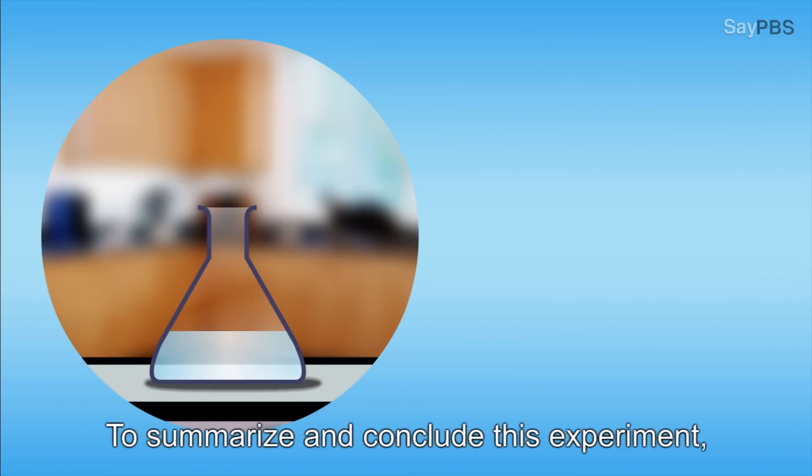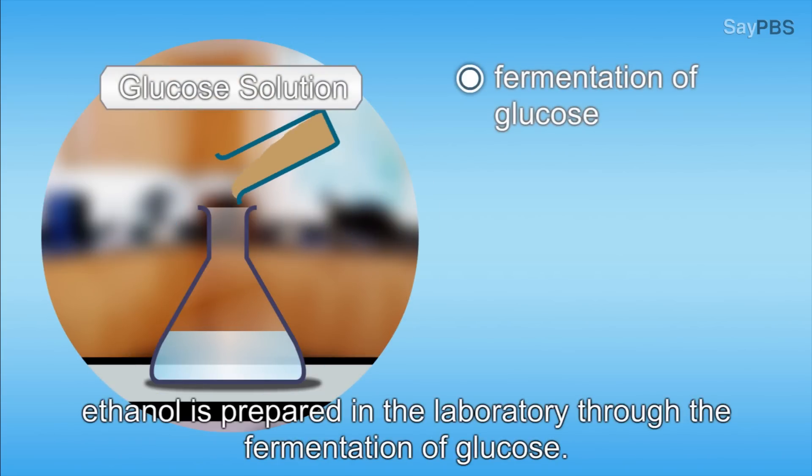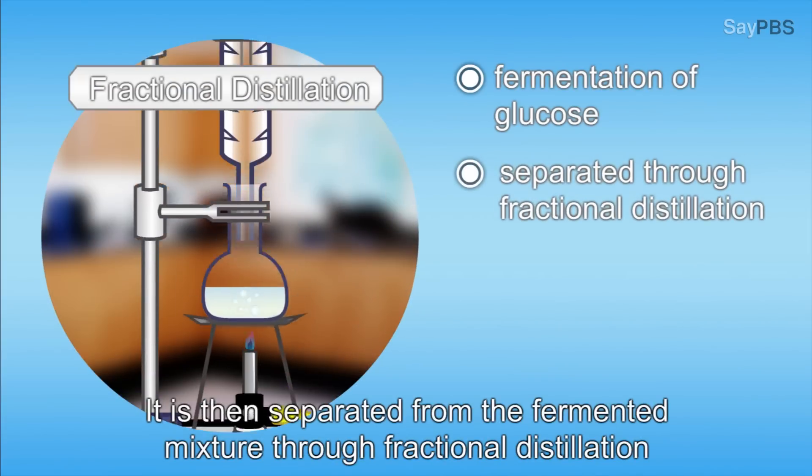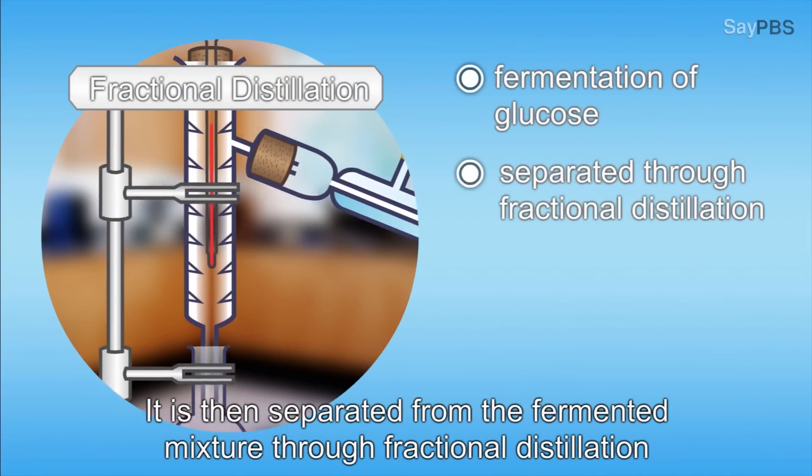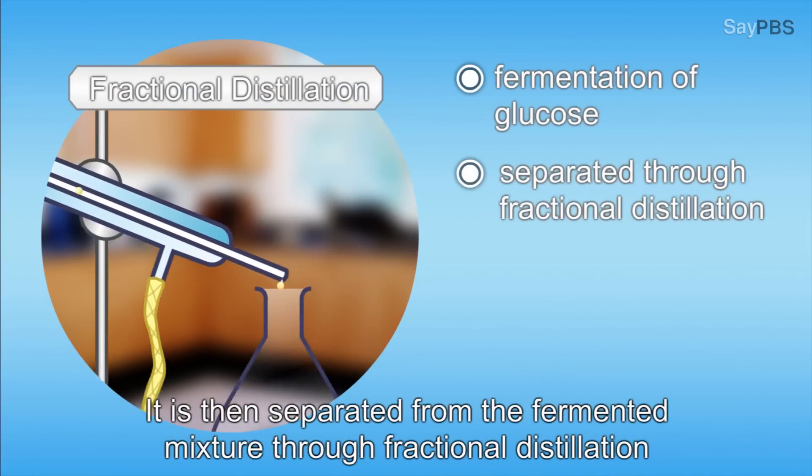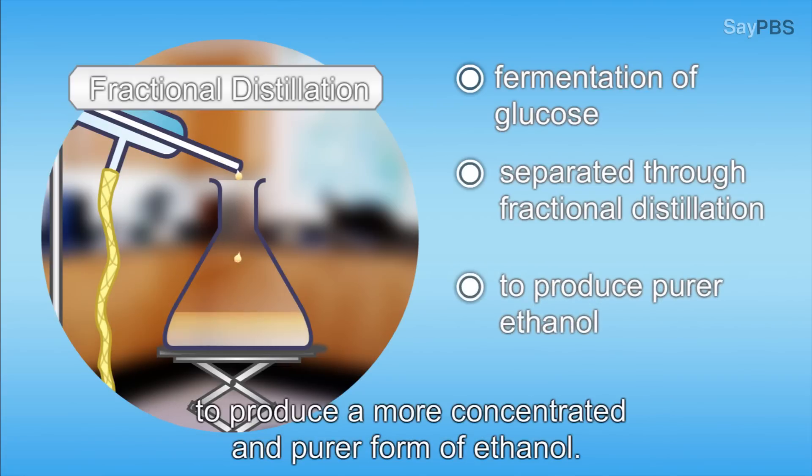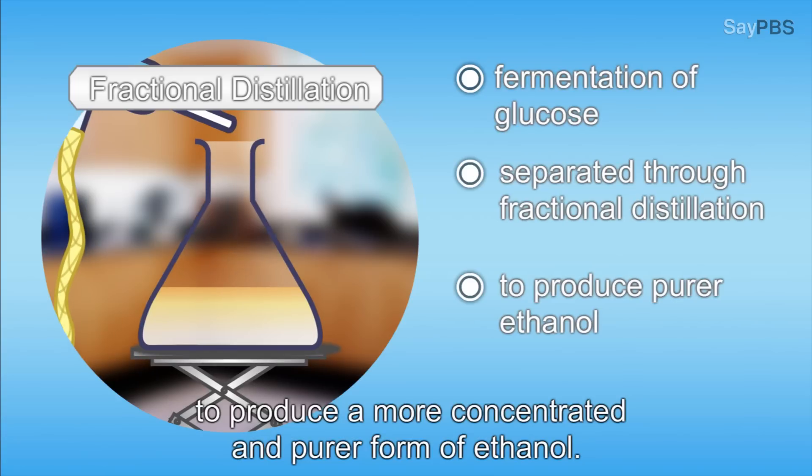To summarize and conclude this experiment, ethanol is prepared in the laboratory through the fermentation of glucose. It is then separated from the fermented mixture through fractional distillation to produce a more concentrated and purer form of ethanol.